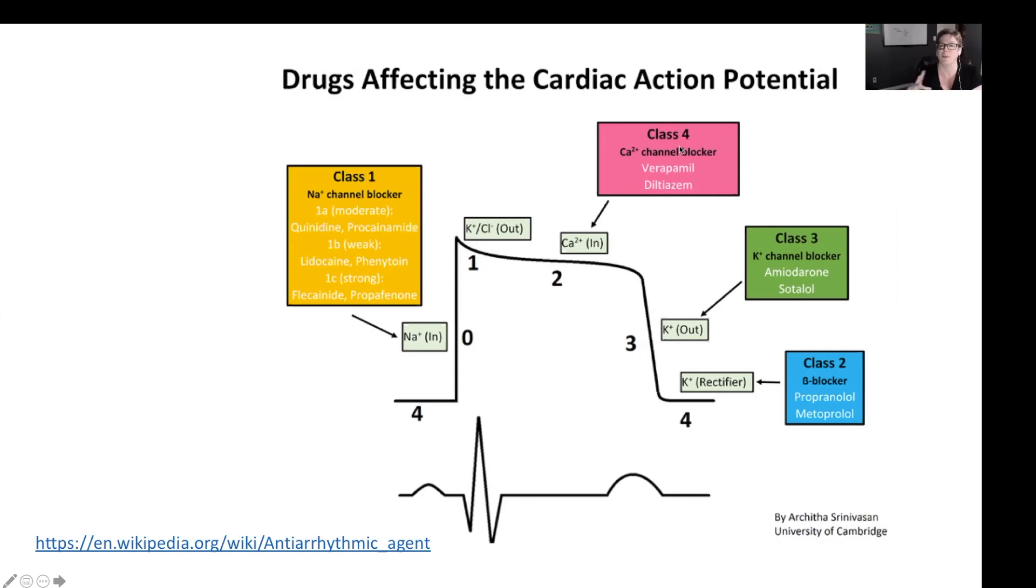Our class three medications, these are our potassium channel blockers. They're going to create a change in the atrial and ventricular arrhythmias by preventing the movement of potassium back into the cell, delaying the time it takes to repolarize and be able to accept a new signal.